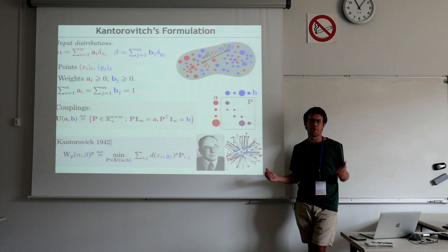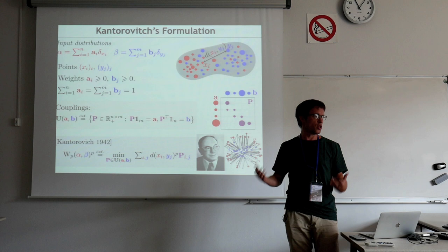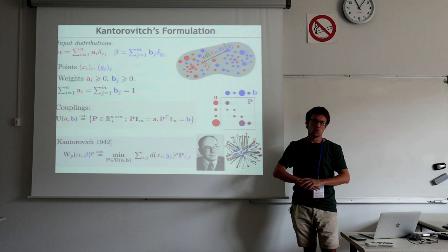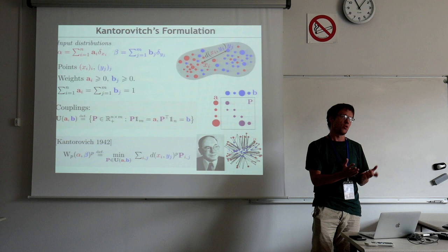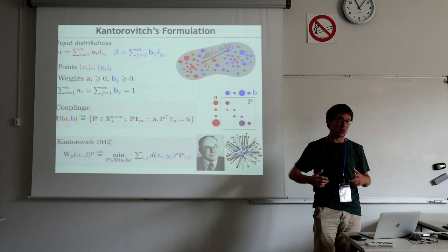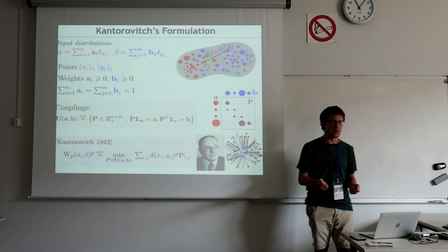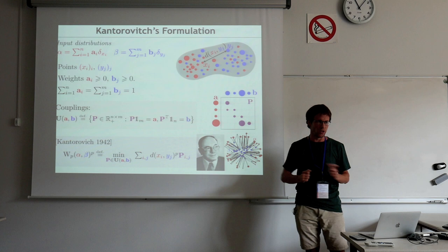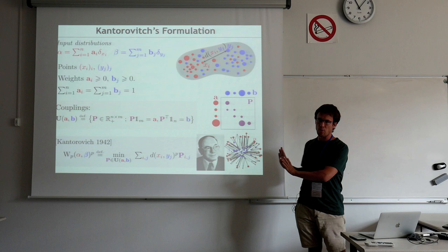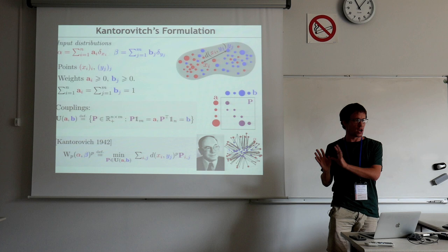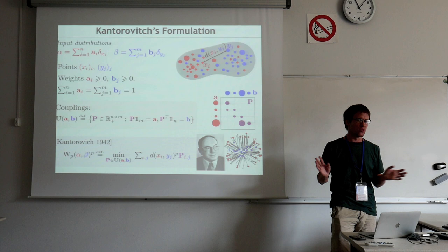Nowadays, with gigantic amounts of data in image processing, medical imaging, and machine learning, you cannot use the simplex algorithm — it's just too slow. The question is how to scale optimal transport to many points, in high dimension, possibly with some approximation. Data today is really noisy with a lot of errors in very high dimension, so it doesn't make sense to need zero error. Even a very crude approximation is more than enough for many applications, and you care more about having fast algorithms than accurate ones.